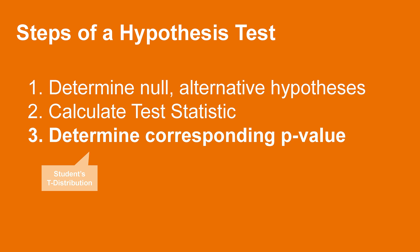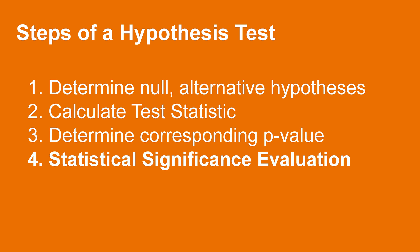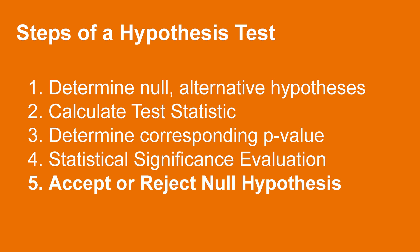For this test, we will refer to the student's t-distribution to determine this p-value. In step 4, the p-value is compared to a threshold of statistical significance, which is determined at the beginning of the problem depending on how confident we want to be that our result is non-random. Finally, in the last step, we either accept or reject the null hypothesis based on the threshold of statistical significance. Let's go through these steps one at a time in the context of our example problem to see how this all fits together.